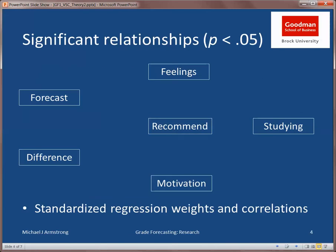I also looked for relationships between the student responses on each of the questions. I found, first of all, there's a positive connection between the forecast grade and what the students reported as a difference between their expectation and that grade. That is to say, students with high forecast grades were more likely to say the forecast was higher than expected, whereas those with low forecast grades were more likely to say the forecast was lower than expected. That difference between expectation and forecast showed influences on both feelings and student recommendations: students where the forecast was higher than expected were more likely to report positive feelings and more likely to recommend we continue to offer the forecasting technique.